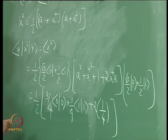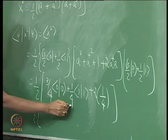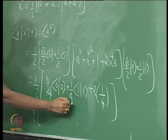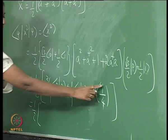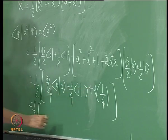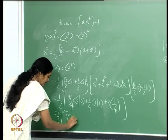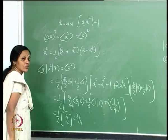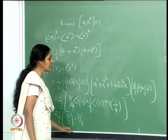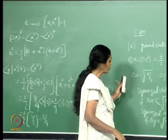Simplifying: there is a half from outside, and the inner products give 3/4 plus 1/4 which is 1, plus the 2 a dagger a contribution of 1/4. So the expectation value of x squared in this state is 3/4.